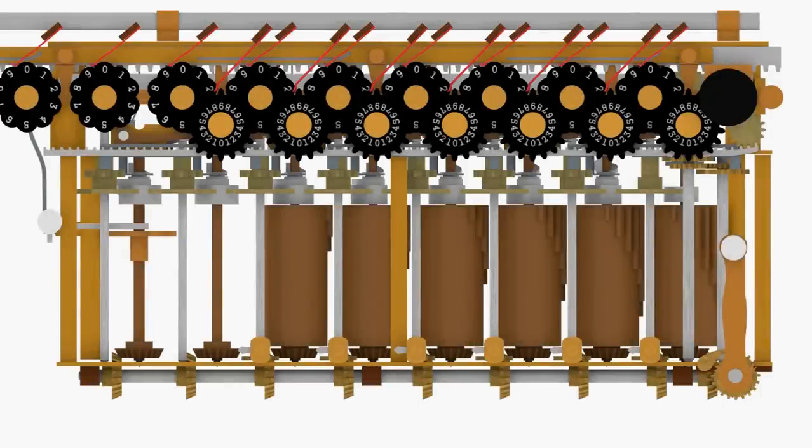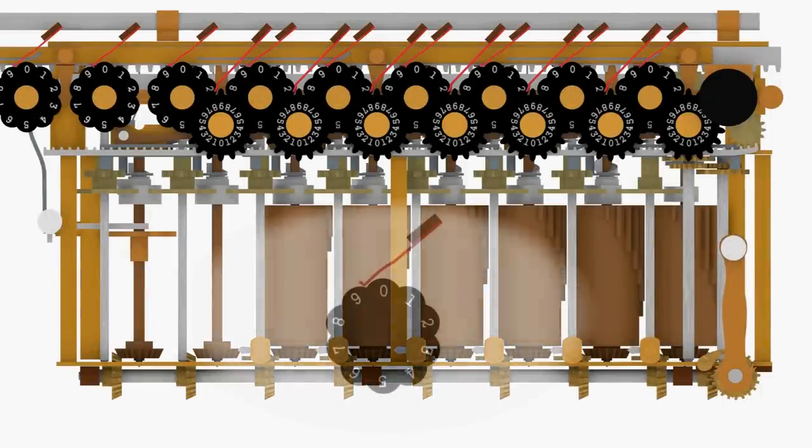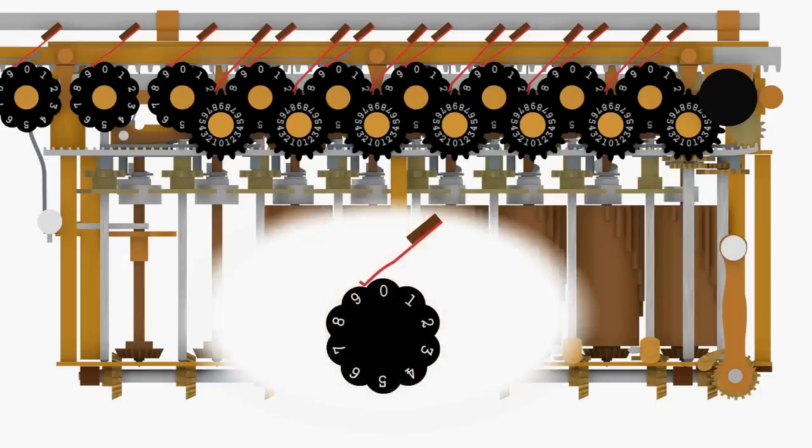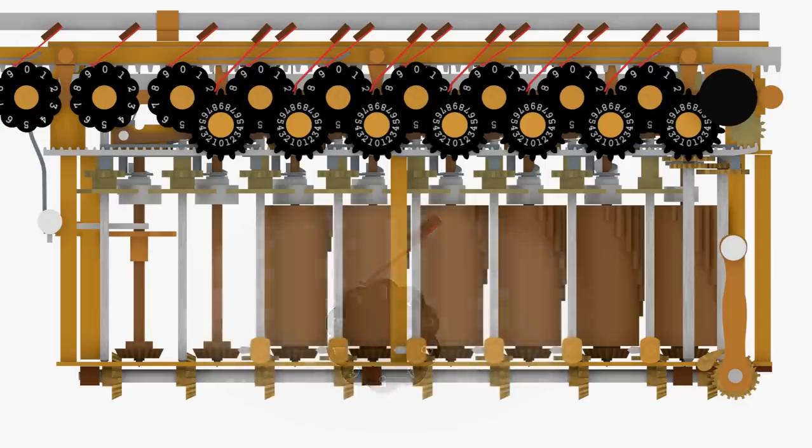Lastly, leaf springs are used to hold the accumulator dials in place while the carriage is being shifted and the counter dials when they are not engaged with the turns counter gear assembly.